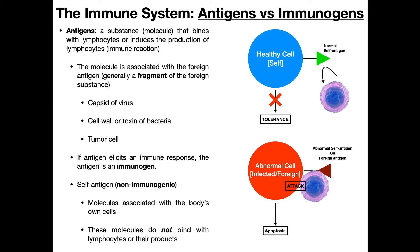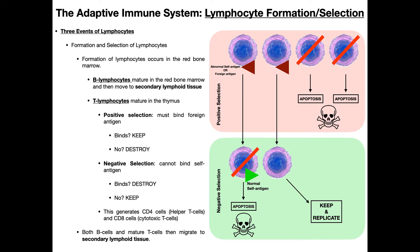In this video, we're going to be discussing something called clonal selection. Clonal selection is a process that lymphocytes have to go through in order to ensure that they don't attack your normal self-cells, because obviously we want our immune system to leave those cells alone. If that system fails, then we would develop what's called an autoimmune condition.